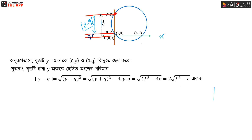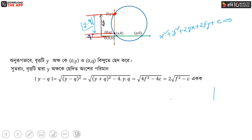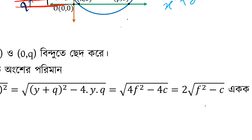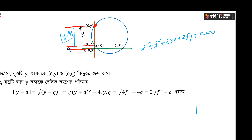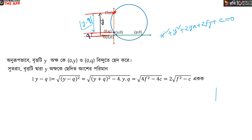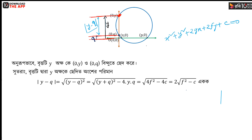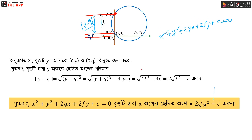Going back to the circle equation x squared plus y squared plus 2gx plus 2fy plus c equal to 0, we add a point where x is 0 and then where y is 0 to find the intercepts on each axis.